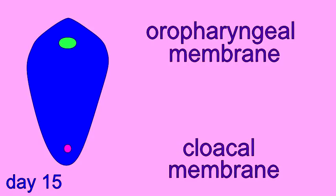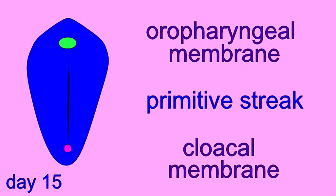Thus, early in the third week, the head and tail ends of the embryo are established. Between the oropharyngeal membrane of the head and the cloacal membrane of the tail, a groove forms known as the primitive streak.